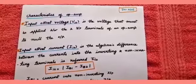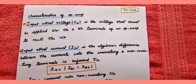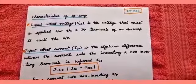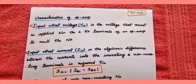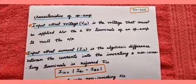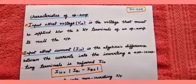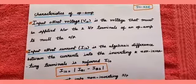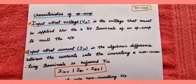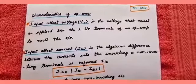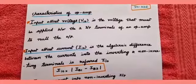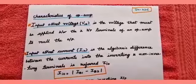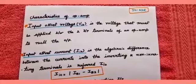Let us start with the first characteristic: input offset voltage, symbolically written as Vio. Input offset voltage is a voltage that must be applied between the two input terminals of an op-amp to null the output. A common voltage applied to both input terminals could be noise voltage. So this characteristic defines the voltage that must be applied between the two input terminals to null the output.